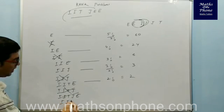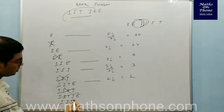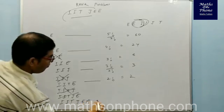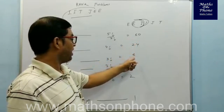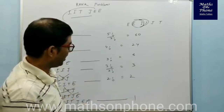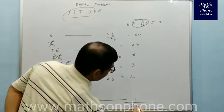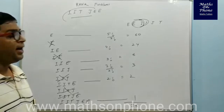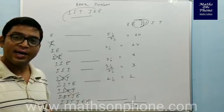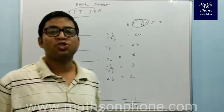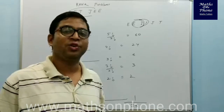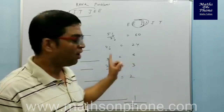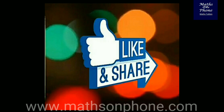The final word is I-I-T-J-E-E. Summing up: 60 + 24 + 6 + 3 + 2 = 95, and the final word itself is position 96. So the rank of the word I-I-T-J-E-E in the dictionary of all these words is 96. If you like my videos, please subscribe to my channel and share my videos. Thank you.